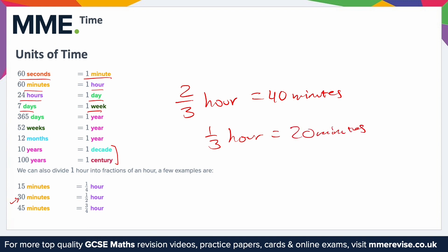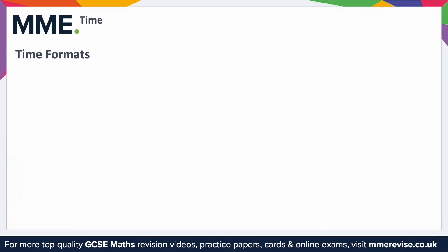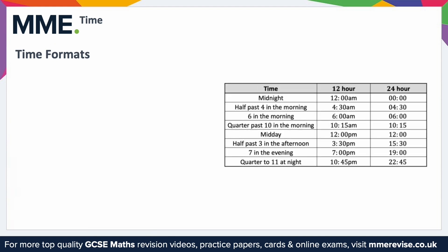You'll be expected to work with fractions of an hour in your exam. Times of the day can be displayed either by a 12-hour clock or a 24-hour clock, and there are some differences in how you read these. A table shown here compares the two. Midnight on a 12-hour clock is 12 a.m. On a 24-hour clock that's shown as 00:00. In the mornings they all look pretty similar — for example, 4:30 a.m. is just shown as 04:30, and 6 a.m. is just 06:00.